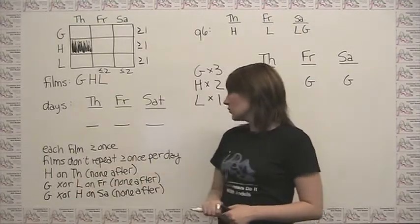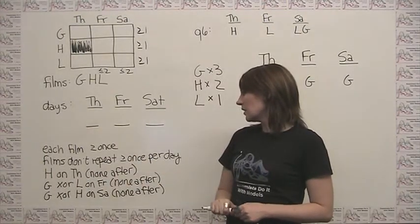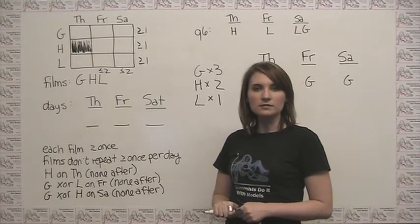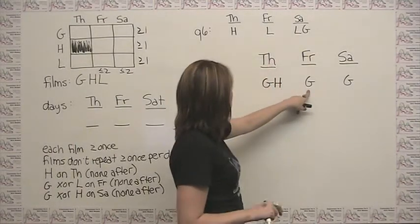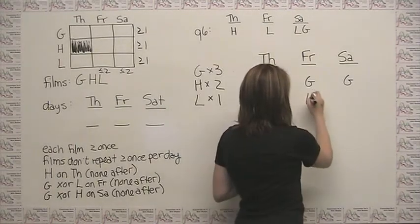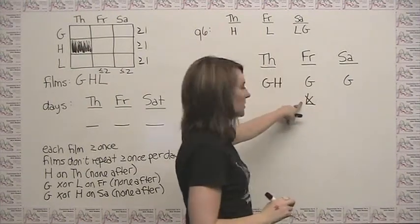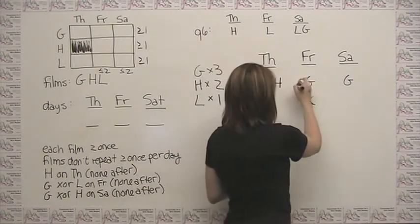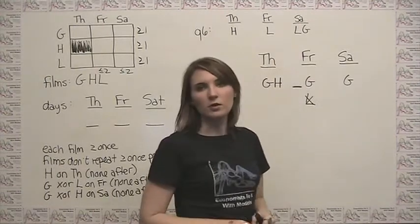Here, we have to have exactly one of G or L on Friday. Well, we already have a G, so this means that we can't have L on Friday. And we also know that if anything else is going to go on Friday, it has to come before G.